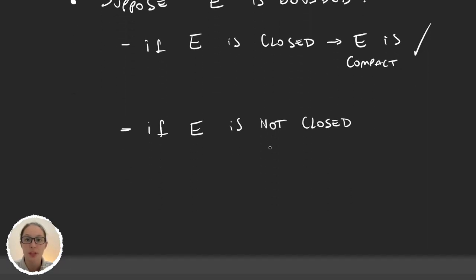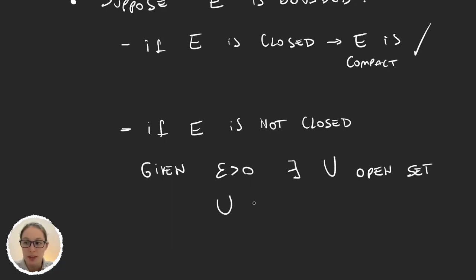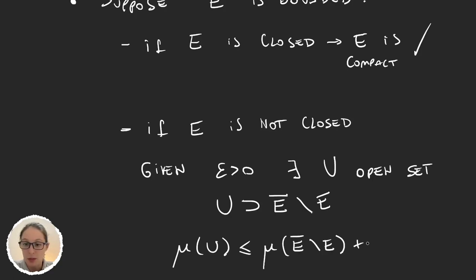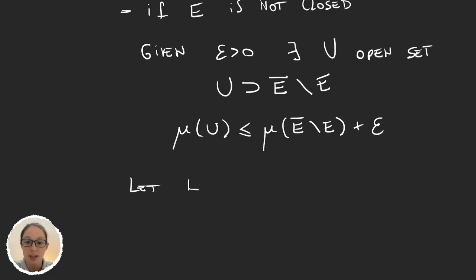Now we will use what we just proved. Given epsilon, there exists an open set U, but we apply this not to E, but to the set closure(E) minus E. So U is an open superset of closure(E) minus E satisfying: mu(U) is less than or equal to mu(closure(E) minus E) plus epsilon. We then define a set K as the closure of E minus this open set U, which equals closure(E) intersection U-complement.